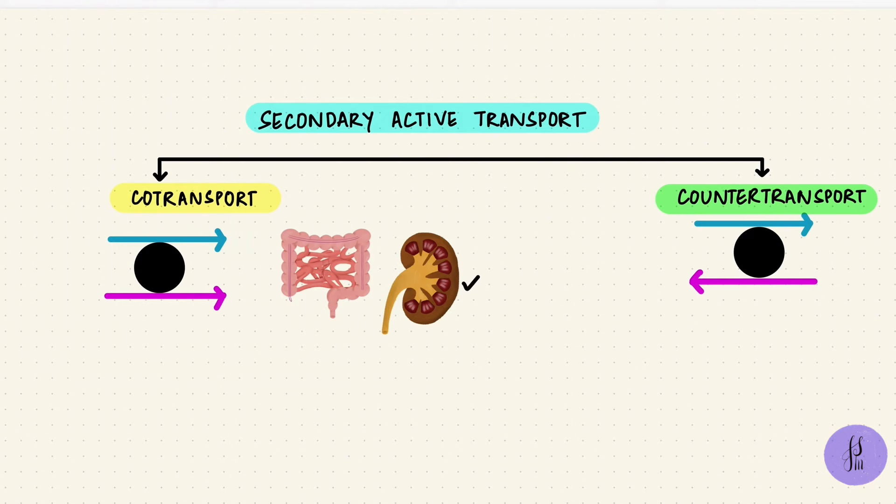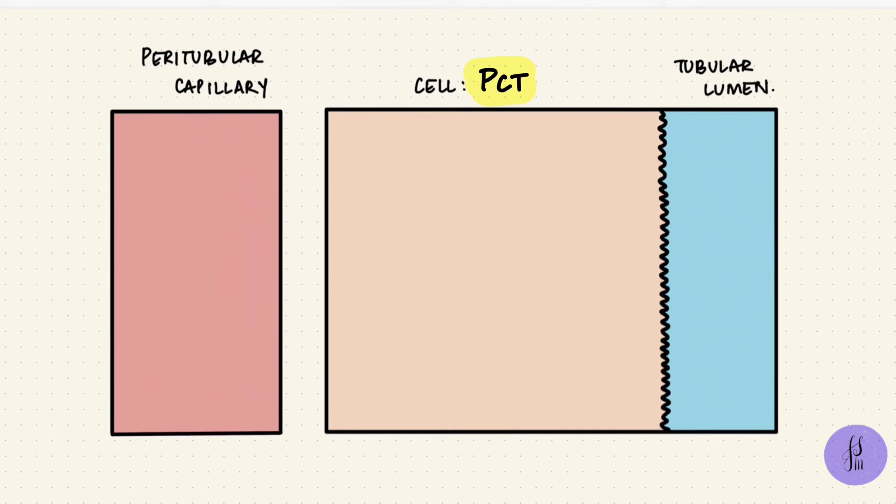This is a proximal convoluted tubule cell, and it's got a basolateral membrane towards the interstitium and a luminal membrane towards the lumen. The PCT is a major site of reabsorption in the kidney. Glucose and amino acids get reabsorbed here. That is by secondary active transport, so let's see how that works.